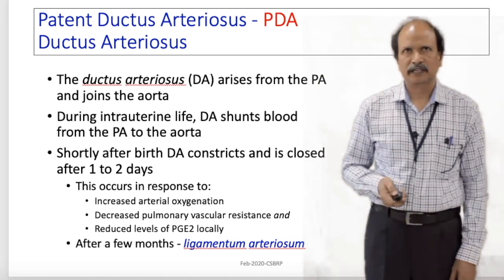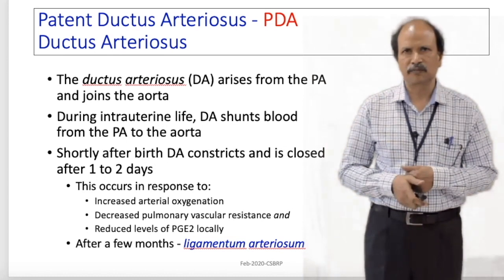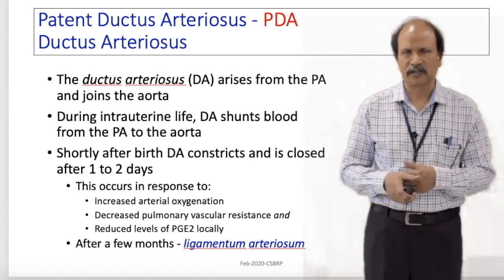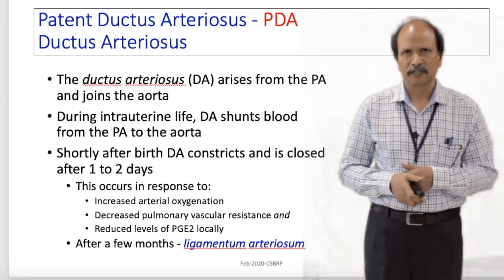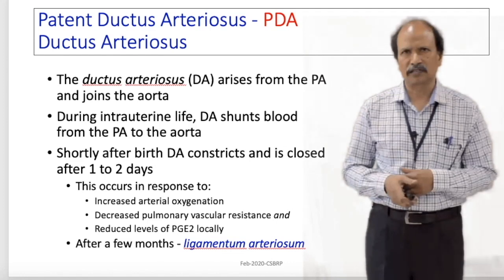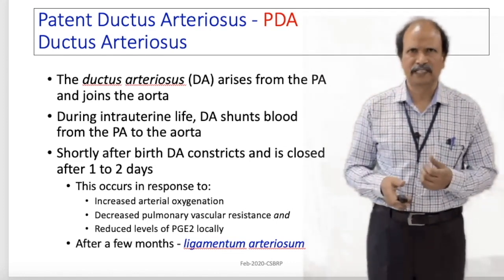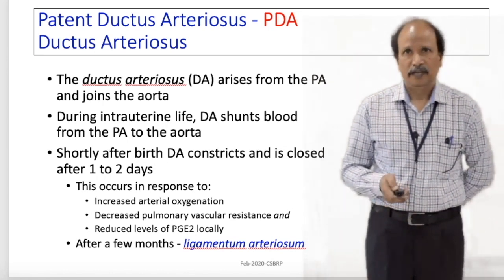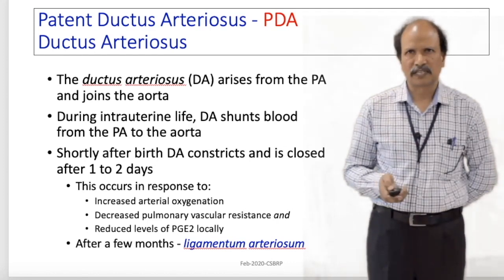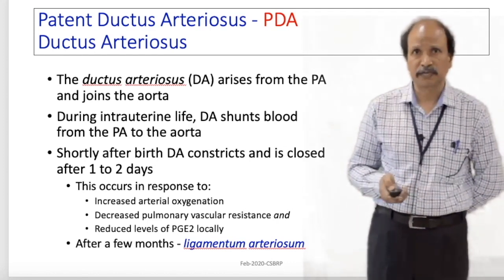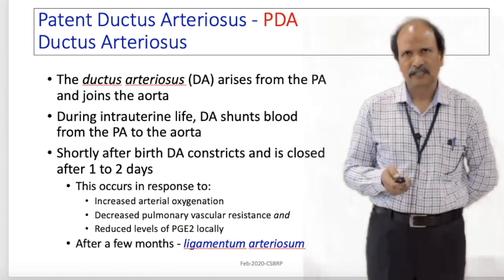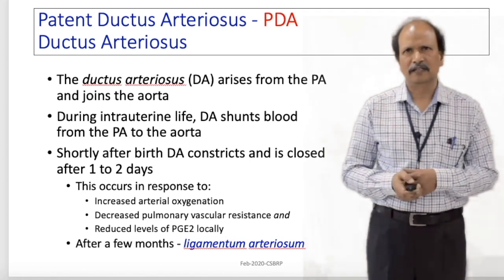Patent ductus arteriosus is another congenital anomaly. The ductus arteriosus communicates the pulmonary trunk with the aorta and is required for survival in intrauterine life. Soon after birth, within two days, it should close. Mechanisms responsible for closure include reduced prostaglandin E2 levels, increased oxygen saturation, and fibrotic tendencies stimulated in the ductus arteriosus after birth. In normal life it is converted into a fibrotic band called ligamentum arteriosum. When it persists, blood from the high-pressure aorta enters pulmonary circulation — a left to right shunt.